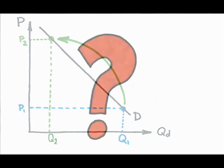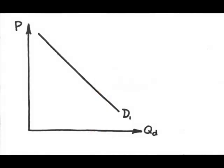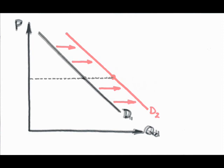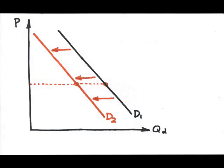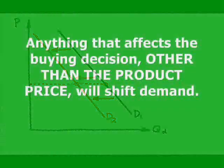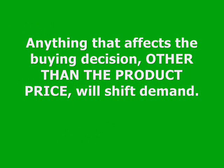Is there anything that could alter the underlying demand, causing it to move either to the right, indicating that there is a greater willingness to purchase even without a price change, or to the left, indicating a decreased willingness to purchase even at the same price? Well, yes. A change in any of the other factors, other than the product price, will fundamentally alter the underlying demand.